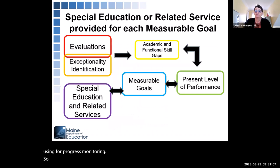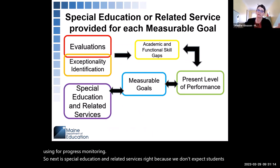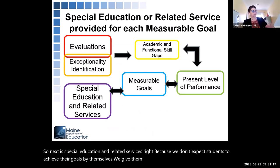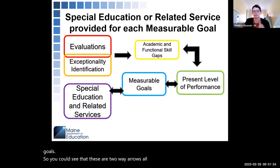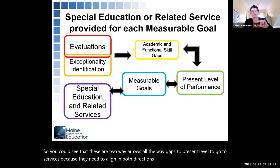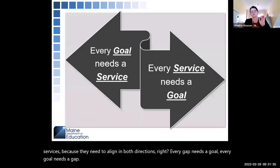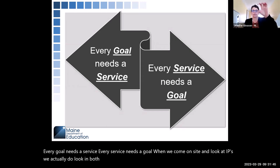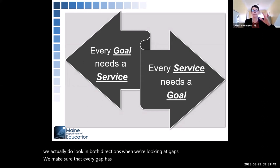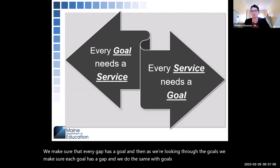Next is special education and related services, because we don't expect students to achieve their goals by themselves — we give them services that allow them to achieve their goals. These are two-way arrows all the way: gaps to present level to goal to services, because they need to align in both directions. Every gap needs a goal. Every goal needs a gap. Every goal needs a service. Every service needs a goal. When we come on site and look at IEPs, we look in both directions — we make sure every gap has a goal and every goal has a gap, and we do the same with goals and services.